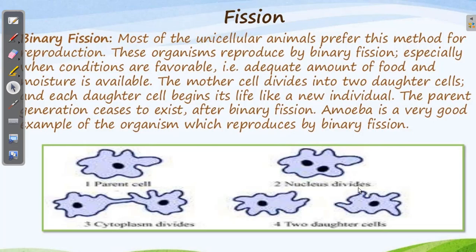There are two steps in this process: first is karyokinesis and second is cytokinesis. 'Karyo' means nucleus — when the nucleus divides into two, it is called karyokinesis. Then the cytoplasm divides, which is cytokinesis. As you see in the picture, in the parent organism the nucleus divides first, then the cytoplasm creates a small gap, leading to the formation of two new cells. Always remember: the nucleus divides first, then the rest.